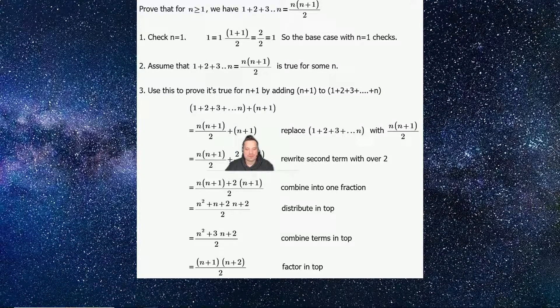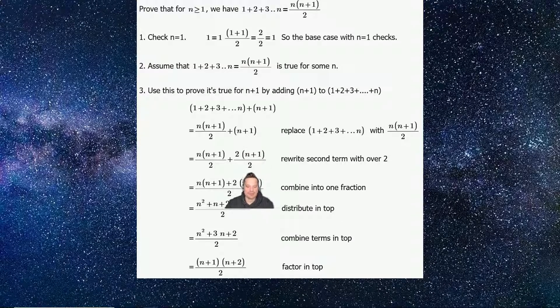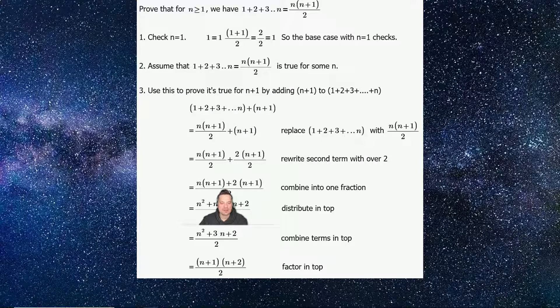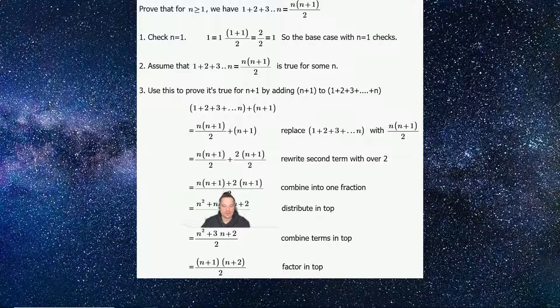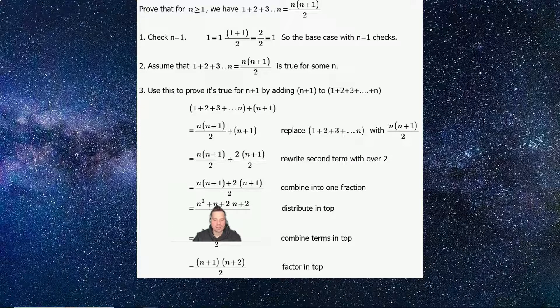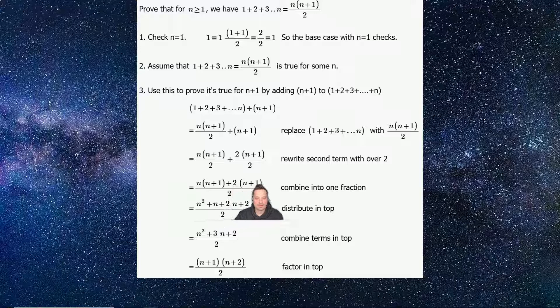So we write the n plus 1 as 2 times n plus 1 over 2. Continue. Place everything over a single denominator. So that's why it looks like this, n times n plus 1 plus 2 times n plus 1 over 2. Next. So distribute this n over to that n that's going to give you n squared. Distribute that n over to the 1 that's going to give you n. Distribute the 2 to the n that's going to give you 2n. Distribute the 2 to the 1 that's going to give you 2.